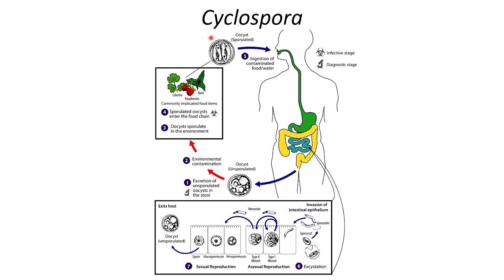Here is the Cyclospora life cycle. You have to ingest the sporulated oocyst through contaminated food or water containing fecal matter with oocysts. Once they reach the small intestine, they excyst and release sporocysts, which then release sporozoites. The sporozoites invade the intestinal cells and begin asexual reproduction as a type I meront, releasing merozoites. Merozoites further differentiate into type II meronts, which produce merozoites that go on to create the sexual form of reproduction — the microgametocyte and macrogametocyte. The microgametocyte fertilizes the macrogametocyte, producing a zygote, from which the oocyst is made. It is unsporulated when it exits the host.